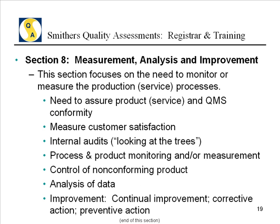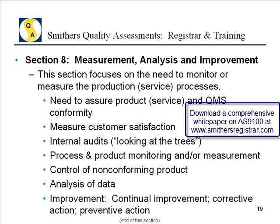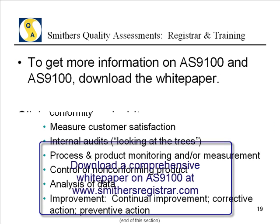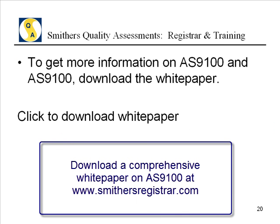Last but not least: you've got a quality system, top management, resources, and a production process — now take a look at it, measure it, analyze it, and improve it. That's a closed-loop system. When you take Section 8 and feed it back into Sections 4, 5, 6, and 7, you've got a closed-loop system that really raises the bar in terms of assuring high-quality product and on-time delivery. For more information on AS9100 or to download a white paper, click here to continue. Thank you.